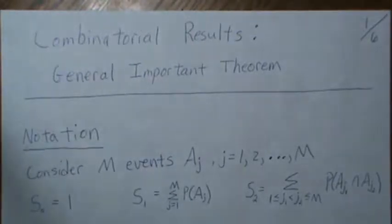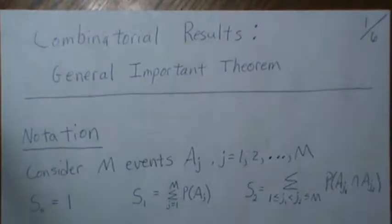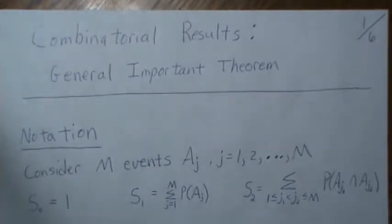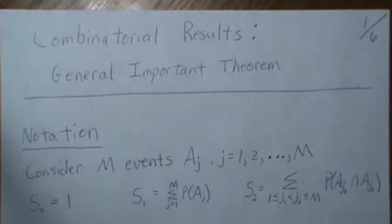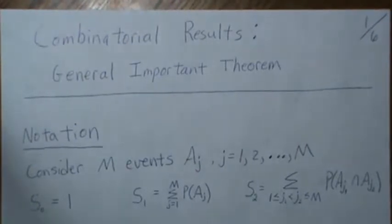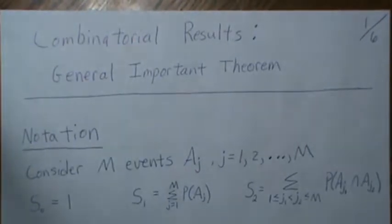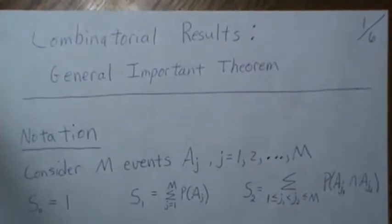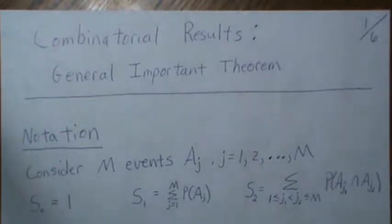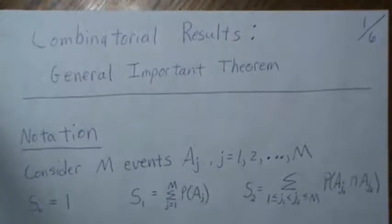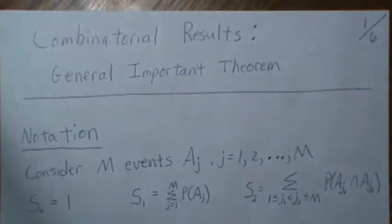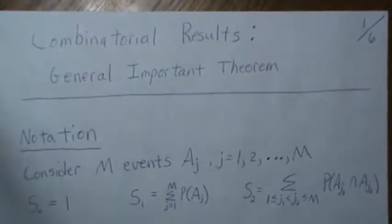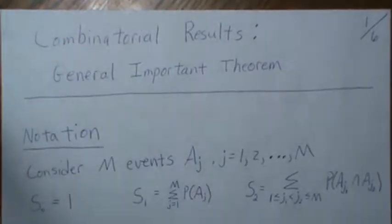Hello, this is the third video in combinatorial results, and I just call it a general and important theorem. I don't know what else to call it, but it helps us calculate the probability of exactly M events happening, or at most M events happening, or at least M events happening — any of those situations. I'll go through some notation, show you the theorem, do an example, and then prove the theorem. Let's just jump right in.